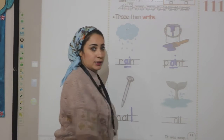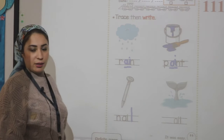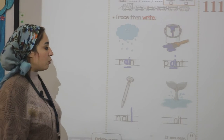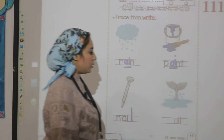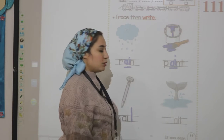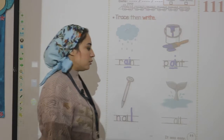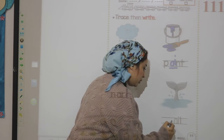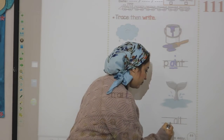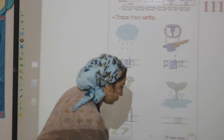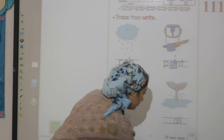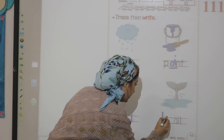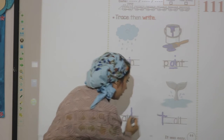And what is this? Tail. What is the first sound here? T. Down stick. Down stick, sleeping dash.